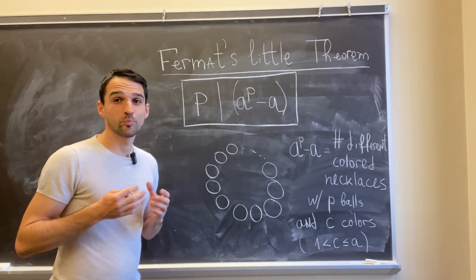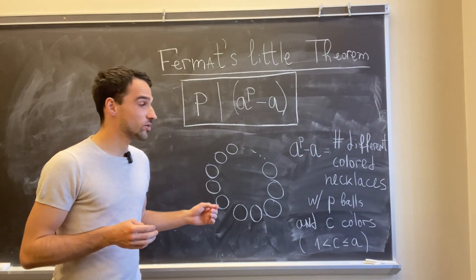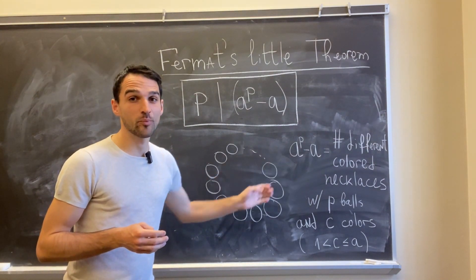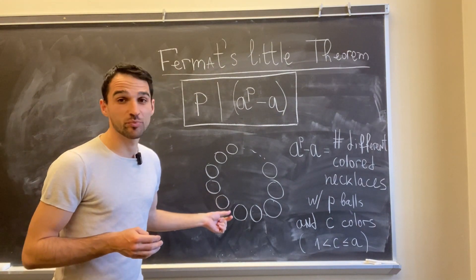So I can put these p balls in a circle and nothing will change, right? So once again, a to the p minus a will be just the number of different such necklaces.